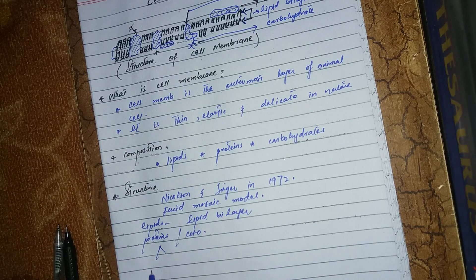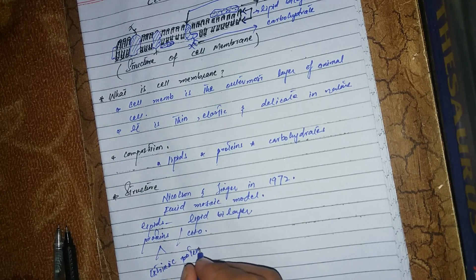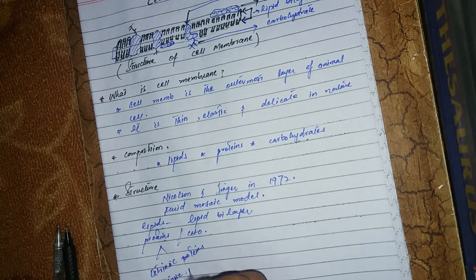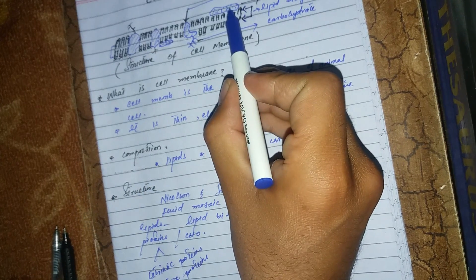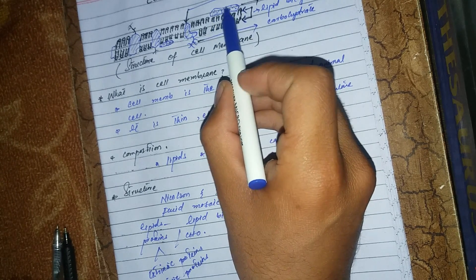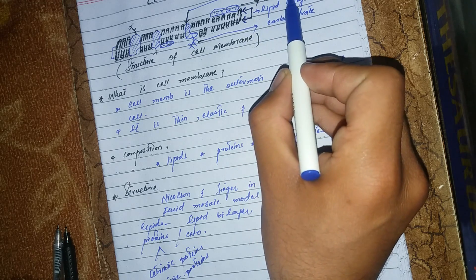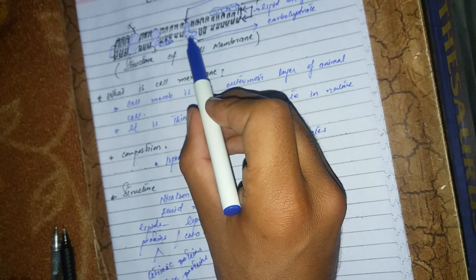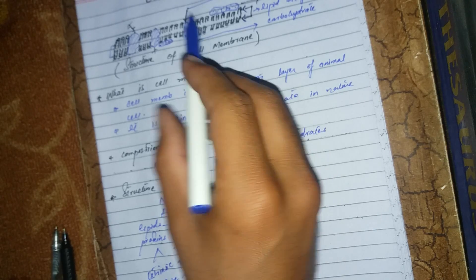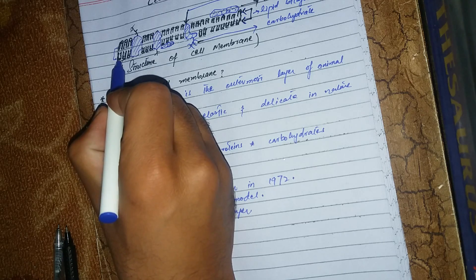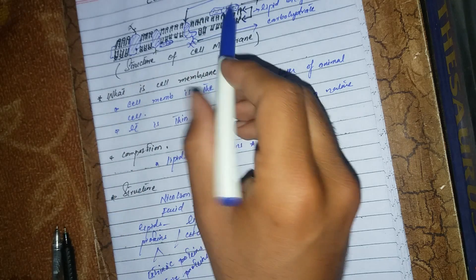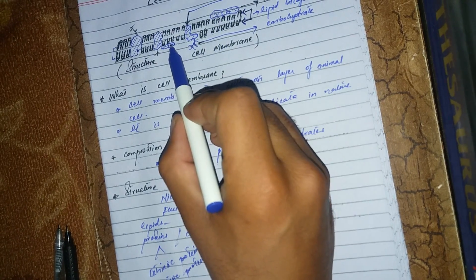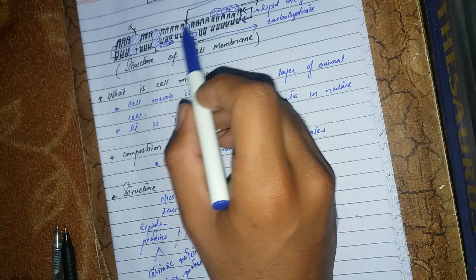Proteins are of two types: extrinsic proteins and intrinsic proteins. Extrinsic proteins are embedded outside of the lipid bilayer. Intrinsic proteins are embedded inside, within the lipid bilayer. Extrinsic proteins are attached to the outside of the lipid bilayer.